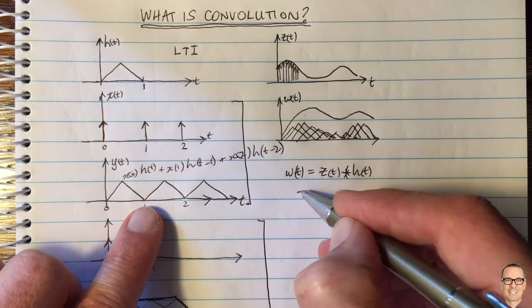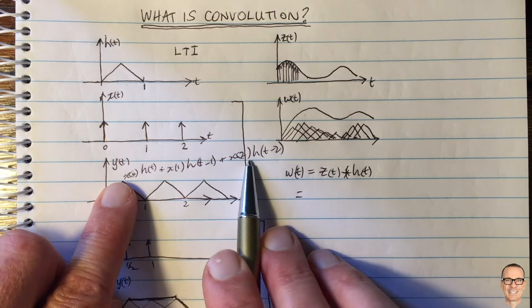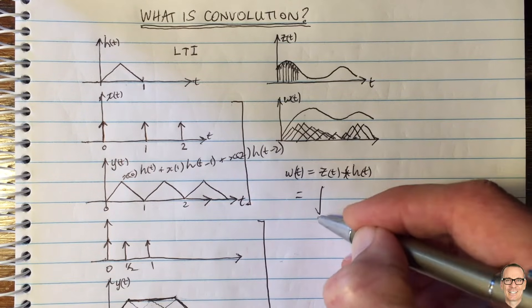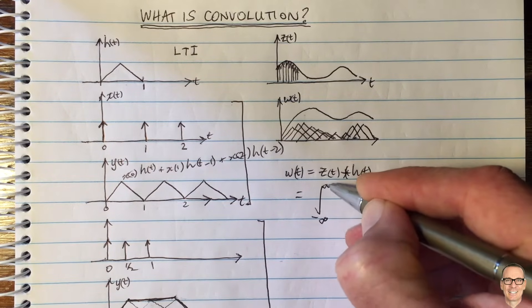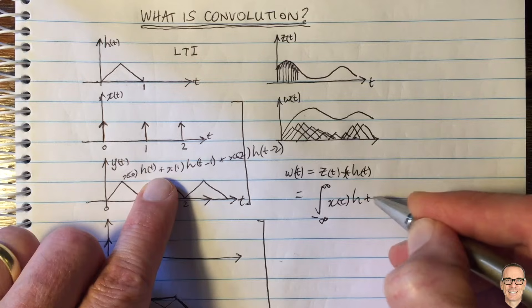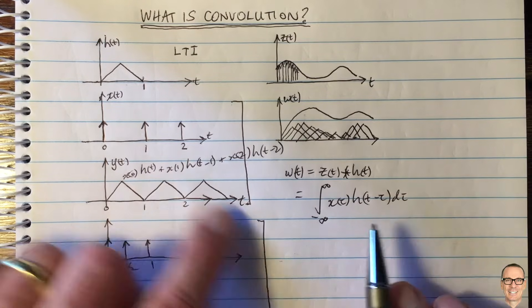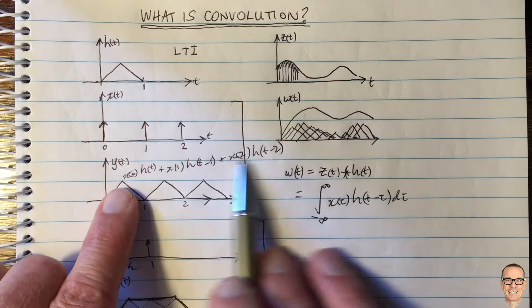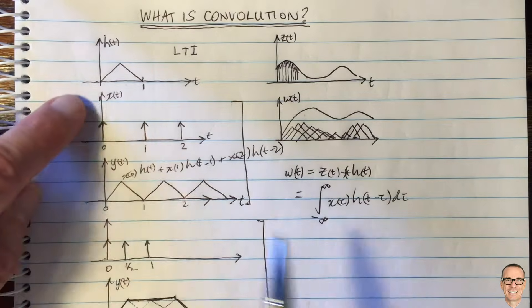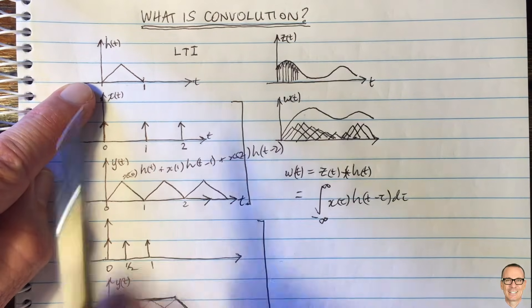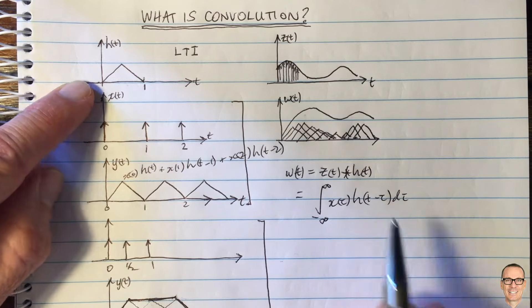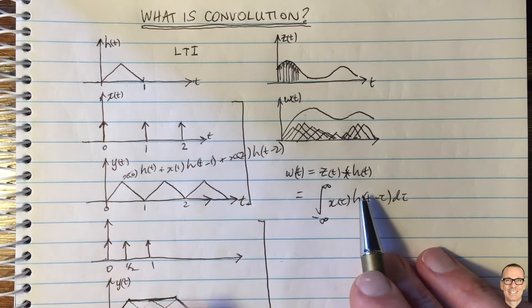So this output is w(t) — the output of our system when we have input z(t) convolved with the impulse response h(t). The general equation is a generalization of the earlier expression: instead of a sum of individual terms we have an integral — an addition of infinitely close things — of x(τ) times h(t minus τ), integrated over τ. That's the generalization when you have infinitely many components. This is convolution as applied to signals and systems for a linear time invariant system. If you want more detail on this equation, check out the video in the link below.